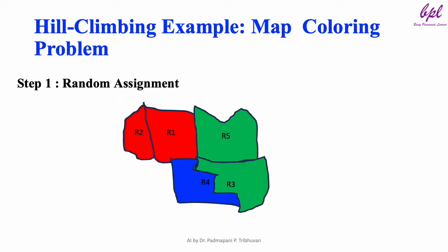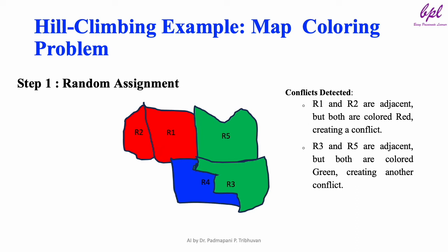Step 1: Initial random assignment. We have a map with five regions R1, R2, R3, R4, R5, and three available colors: red, green, and blue. The random assignment is: R1 is red, R2 is red, R3 is green, R4 is blue, and R5 is green. After this random assignment, conflicts are detected. R1 and R2 are adjacent but both are colored red, creating a conflict. Another conflict: R3 and R5 are adjacent and both are colored green. At this stage, the solution is invalid because two conflicts — R1/R2 and R3/R5 — violate the coloring constraints.